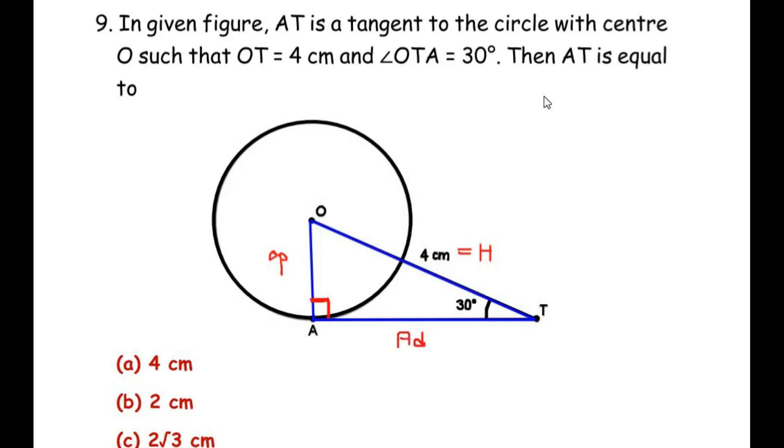Now here in this question we need to find out AT which is the adjacent side. And we have the hypotenuse here. So we do not need the opposite side here. So we will just discard this.